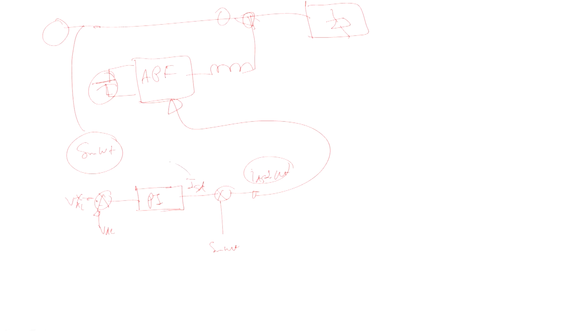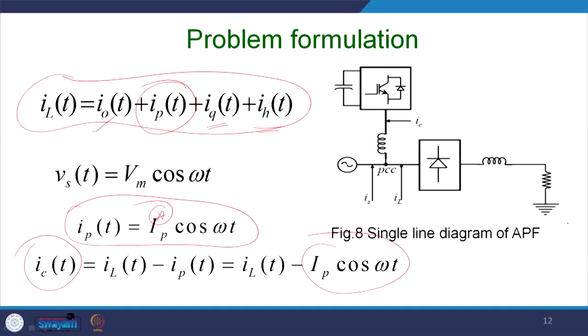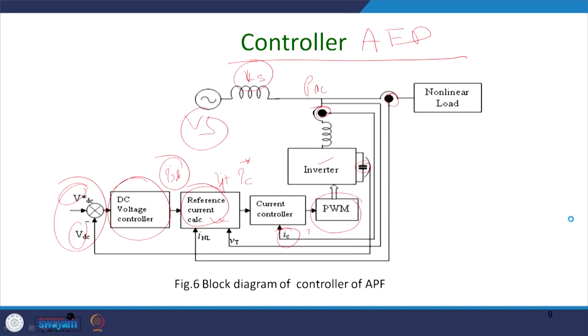The problem with the direct method is that maintaining the DC bus voltage and compensation of the harmonic current both lie on the responsibility of the single PI controller. Tuning this PI controller is quite challenging. For this reason, we generally split this work using the indirect method, where someone maintains the DC bus voltage and another block calculates the reference current, and this combination gives a better power quality solution.